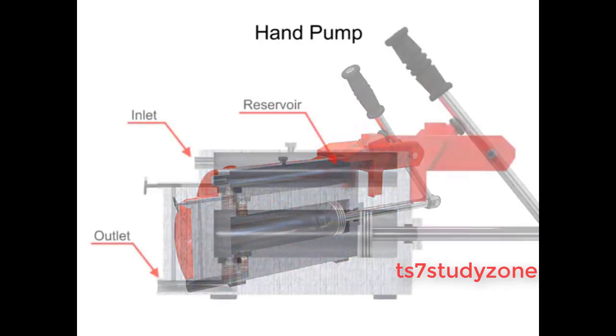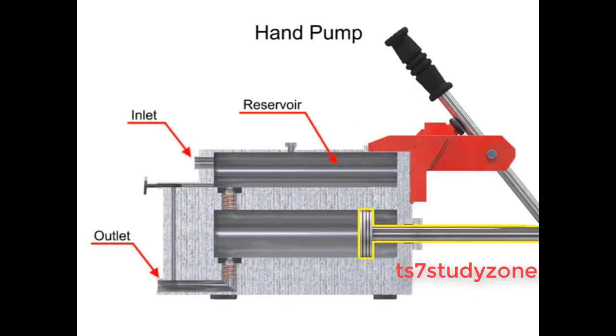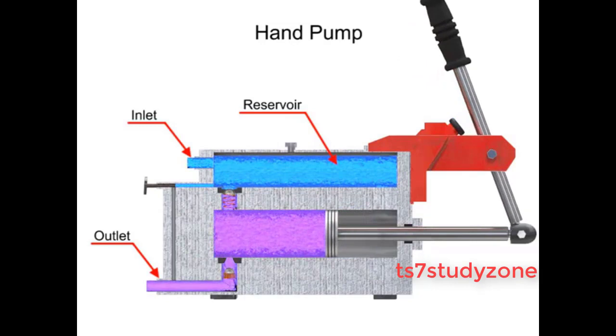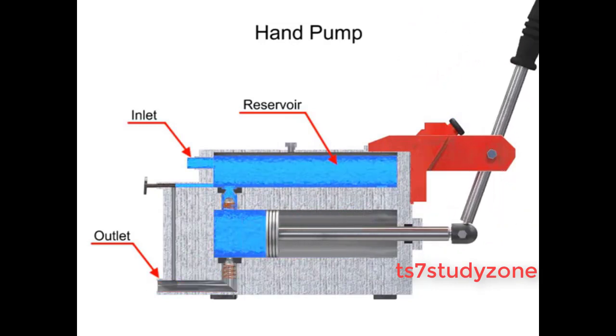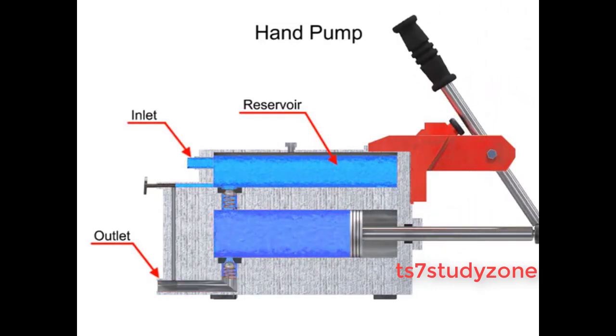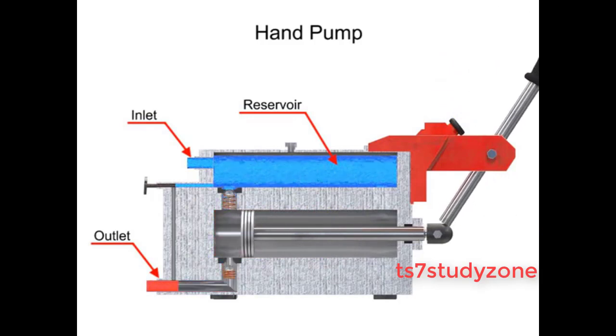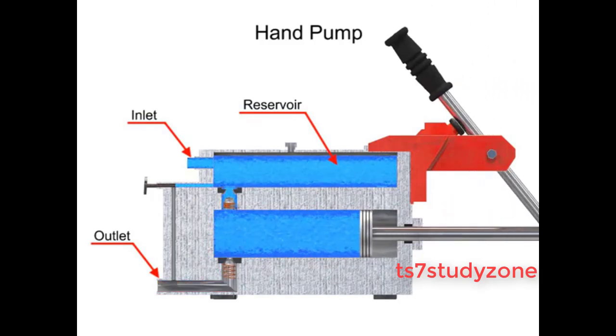Hand pumps are always of piston type and are usually constructed with a piston working between two check valves.